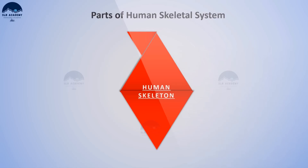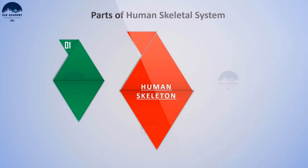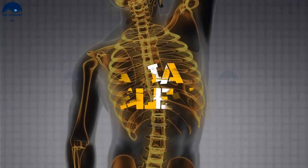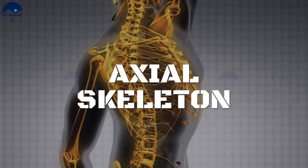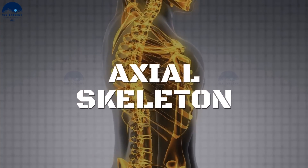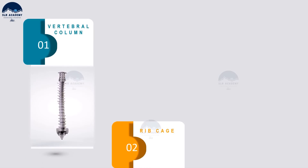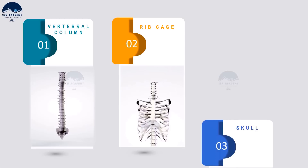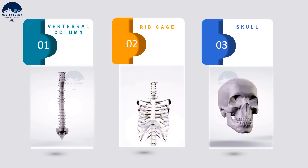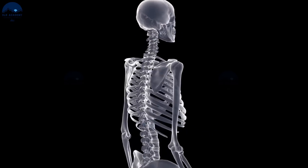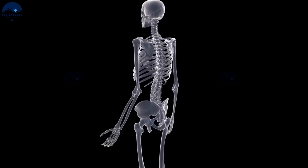The human skeleton can be divided into two groups: the axial skeleton and the appendicular skeleton. The axial skeleton is formed by the vertebral column, rib cage, skull, and other associated bones. The axial skeleton has around 80 bones in total, distributed along the main axis of the body.